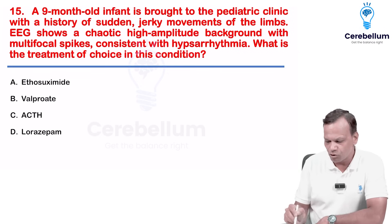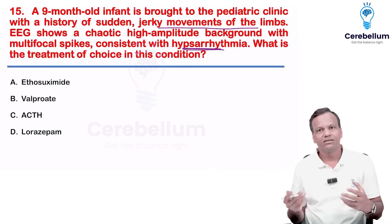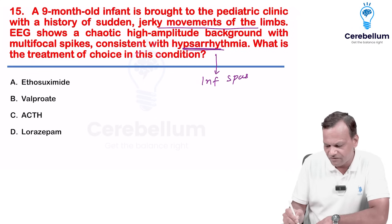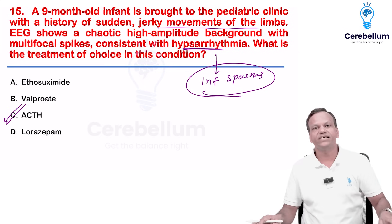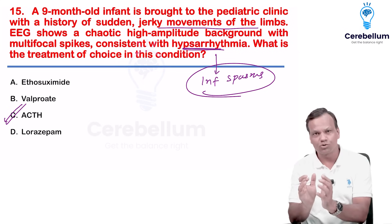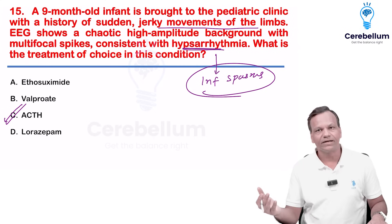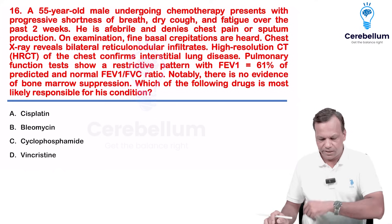An infant is brought to a pediatric clinic with a history of sudden jerky limb movements. EEG shows hypsarrhythmia — this is West syndrome, or infantile spasms. The drug of choice for infantile spasms is ACTH. If infantile spasms are associated with tuberous sclerosis, vigabatrin is used, but no such option is given here. The answer is ACTH.